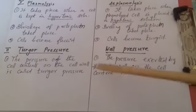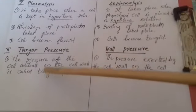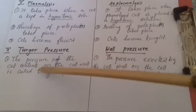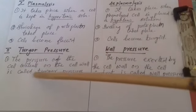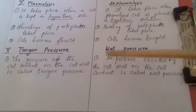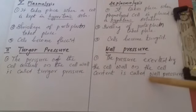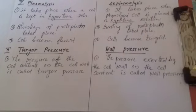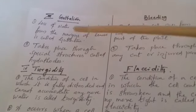Next: turgor pressure and wall pressure. Turgor pressure — the pressure of the cell contents on the cell wall is called turgor pressure. Wall pressure — the pressure exerted by the cell wall on the cell contents is called wall pressure. Only one point needs to be written for this.